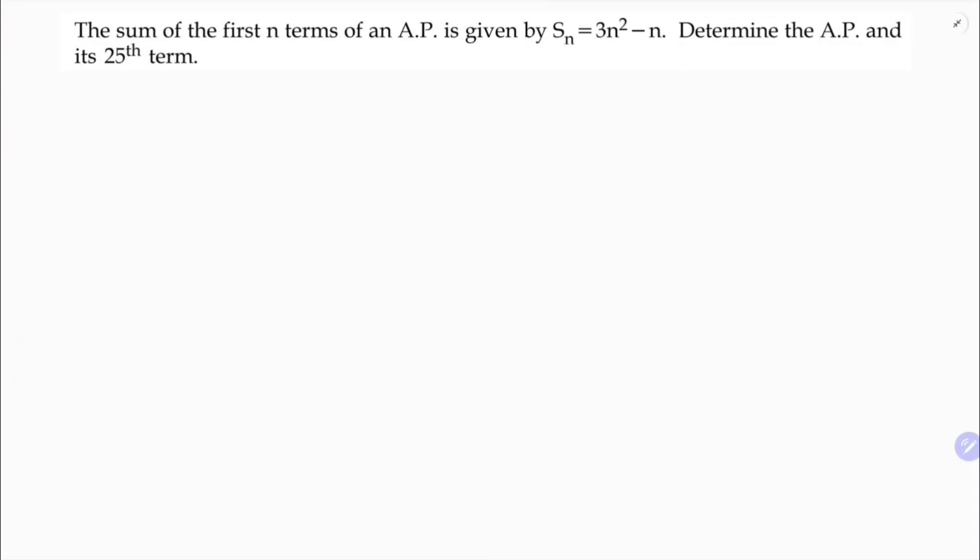The sum of first n terms of an AP is 3n square minus n. Determine the AP and its 25th term. So we need to find the AP and the 25th term.